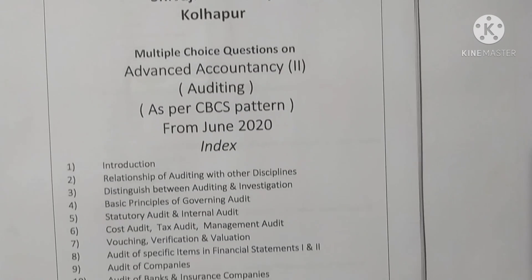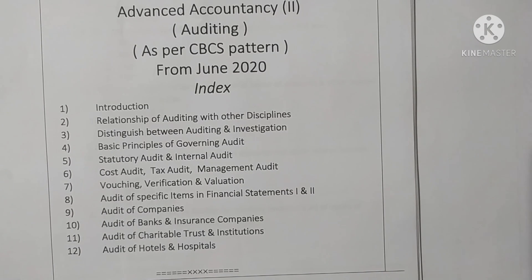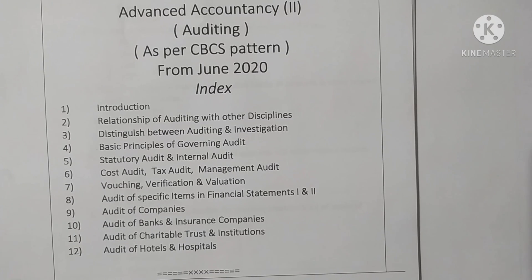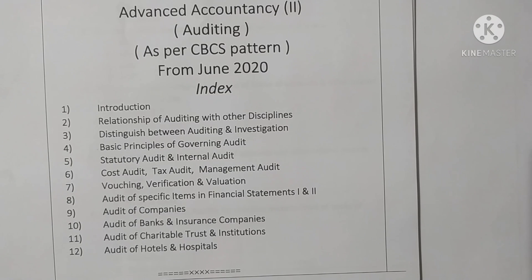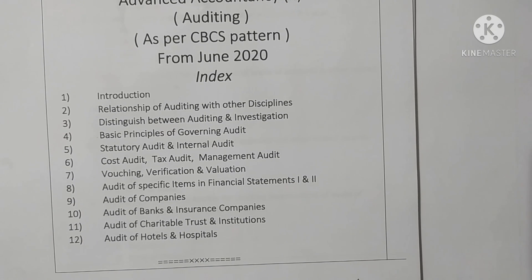Units covered include: introduction, relationship of auditing with other disciplines, distinguish between auditing and investigation, basic principles of governing audit, statutory audit and internal audit, cost audit, tax audit, management audit, vouching, verification and valuation, audit of specific items in finance statements, audit of companies, audit of banks and insurance companies, audit of charitable trusts and institutions, and audit of hotels and hospitals.